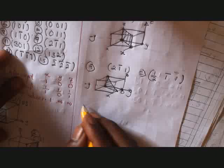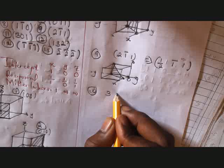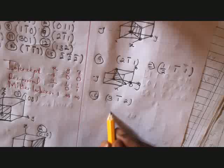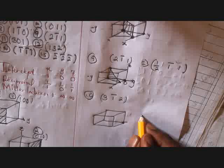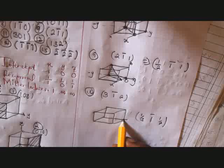Number ten has Miller indices (3̄12). The origin is still shifted since only y is negative. The reciprocals are: 1 over 3 for x, 1 for y, and 1 over 2 (half) for z. So x intercepts at one-third, y at 1, and z at one-half.